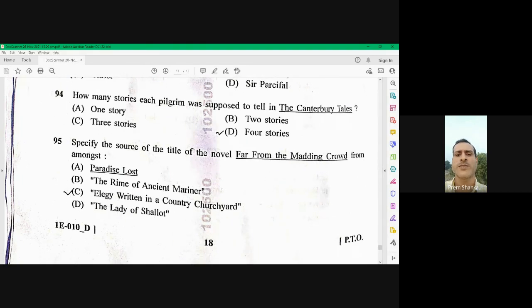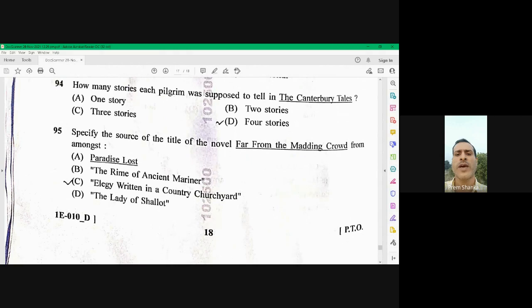Question number 95. Specify the source of the title of the novel, Far From the Medding Crowd. Far From the Medding Crowd has been taken from the line from Allegri written in a country churchyard by Thomas Gray. C is the right option here.